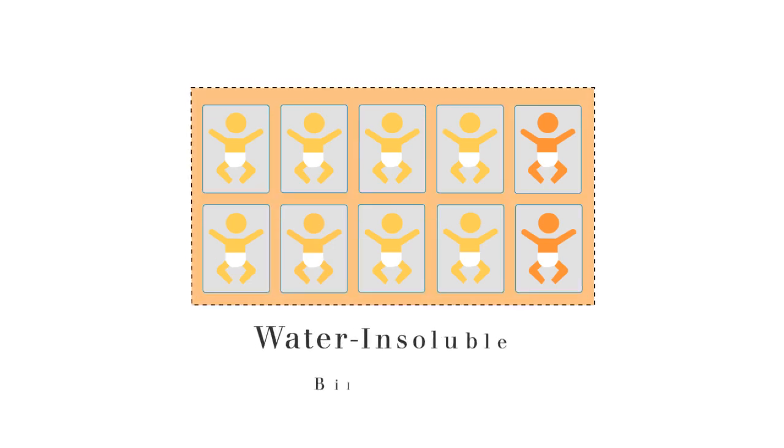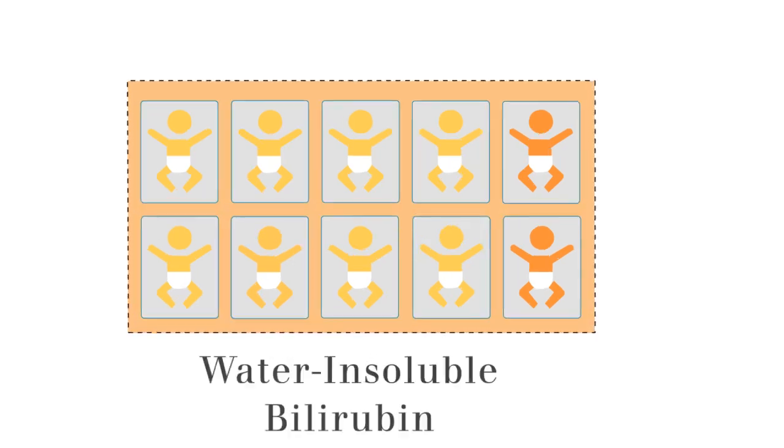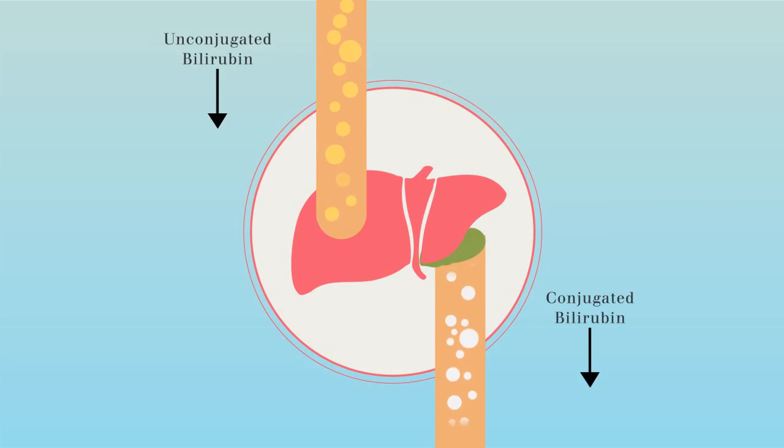80% of newborns show signs of jaundice caused by the accumulation of water-insoluble bilirubin. In healthy newborns, the bile pigment bilirubin becomes water-soluble when taken up by liver cells.